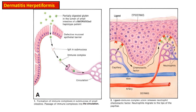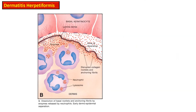This interaction leads to the release of neutrophil chemotactic factor, and neutrophils then migrate to the tip of the dermal papillae. Recruitment of neutrophils then releases various lysosomal enzymes within the dermal papillae. Due to these enzymes, there is dissolution of the basal rootlets and anchoring fibrils, and the start of the dermoepidermal separation occurs.